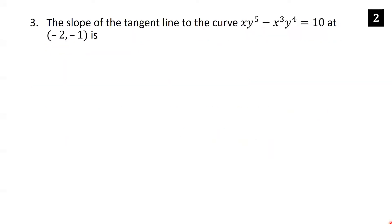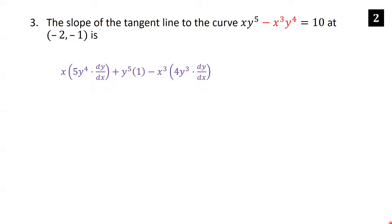Find the slope of the tangent line to the curve x·y⁵ minus x³·y⁴ equals 10 at the point (−2, −1). Differentiate each side using the product rule on each term. For x·y⁵: x times 5y⁴·(dy/dx) plus y⁵ times 1. For −x³·y⁴: negative x³ times 4y³·(dy/dx) plus y⁴ times negative 3x². The right side gives zero since the derivative of the constant 10 is zero.